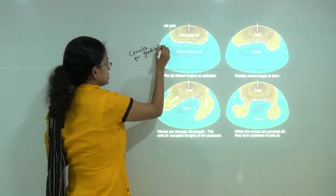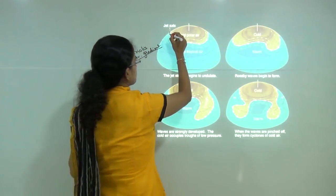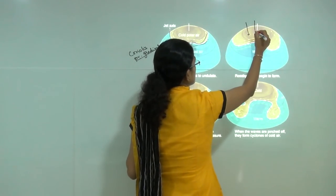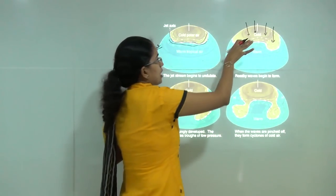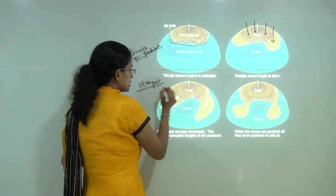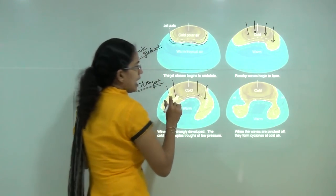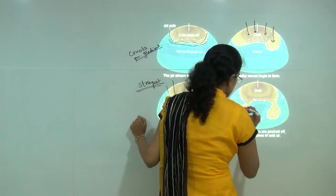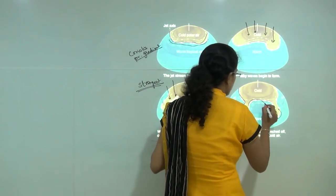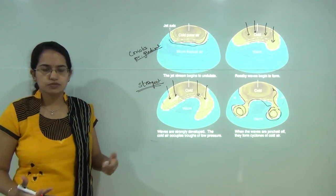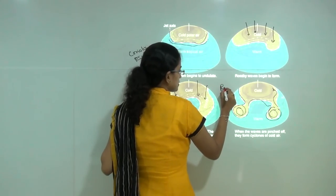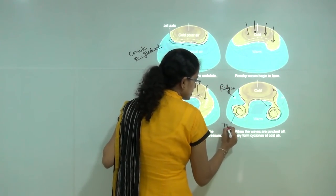What actually happens is you have air flowing through the jet axis or jet stream, but in reality cold air pushes the warm air. During winters this becomes strongest. As a result, there is a huge push from the poles, which creates low pressure centers, and this is how the original wave gets pinched off and the Rossby wave starts to form. Rossby waves have highs and lows — the highs are known as ridges and the lows are known as troughs.